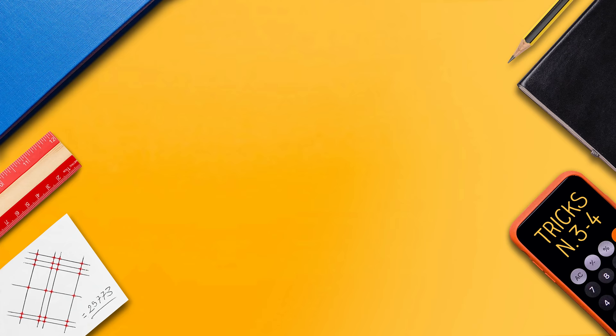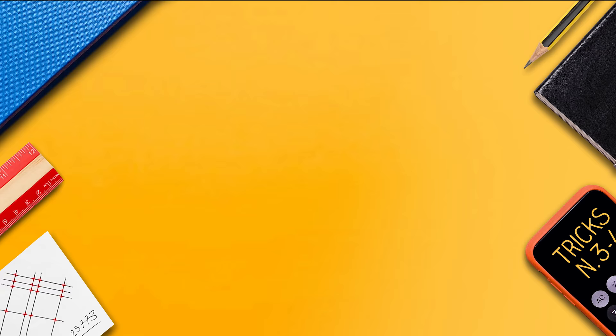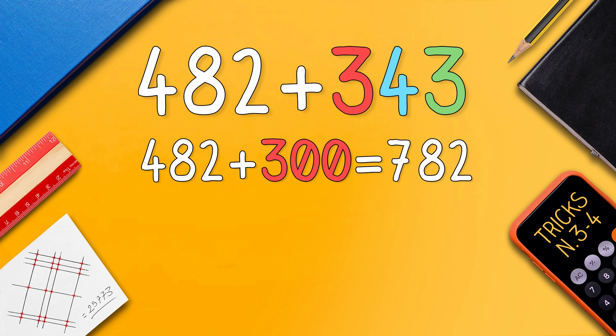The trick for additions and subtractions is pretty easy, but it's probably the one that I'm gonna use the most. And it basically consists in decomposing the numbers. For example, if you have 482 plus 343, I would do 482 plus 300 equals 782 plus 40, 822 plus 3, 825. And obviously you can apply the same concept with subtractions.